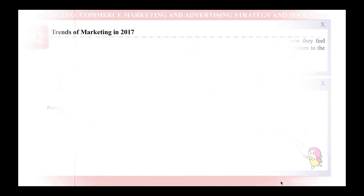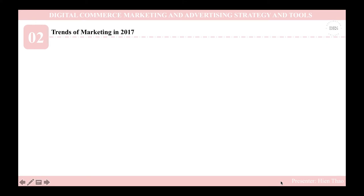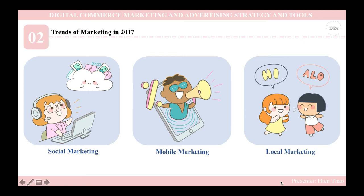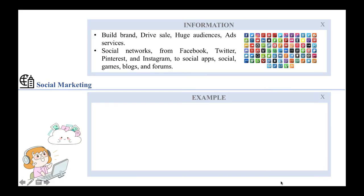In the next part, I would like to talk about digital e-commerce marketing and advertising strategy and tools. There are three key marketing trends in e-commerce that have been leading since 2017 and are still leading in the Vietnam e-commerce market: social, mobile, and local. These three trends have their effects in the market and will continuously be the trend for the future. Let's take a look at each.